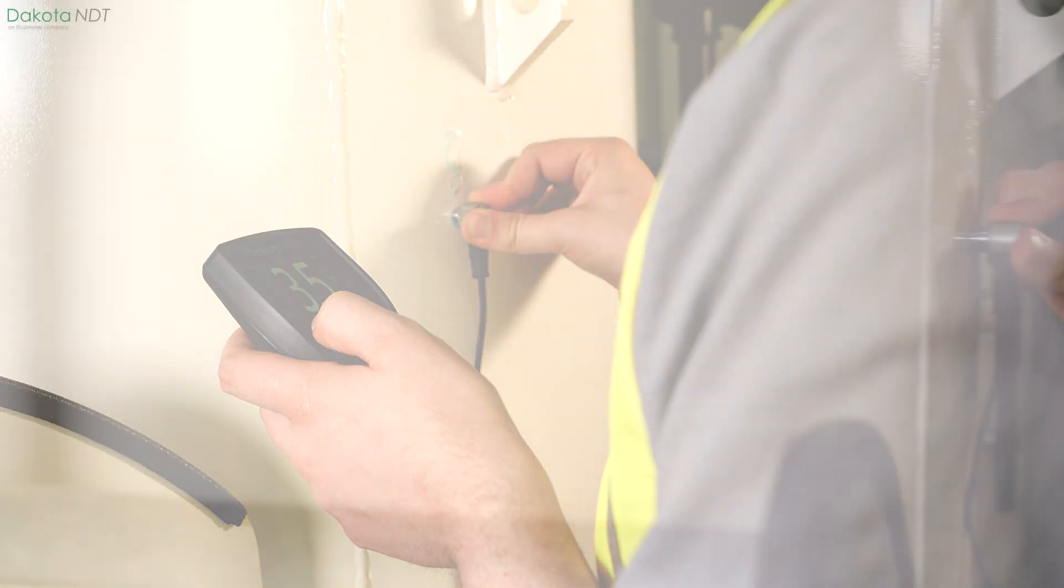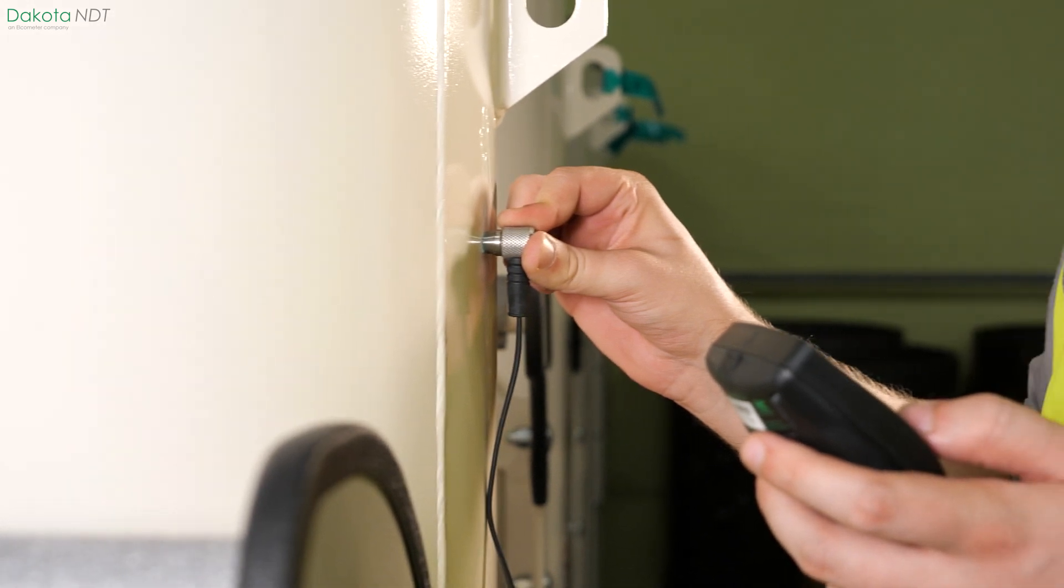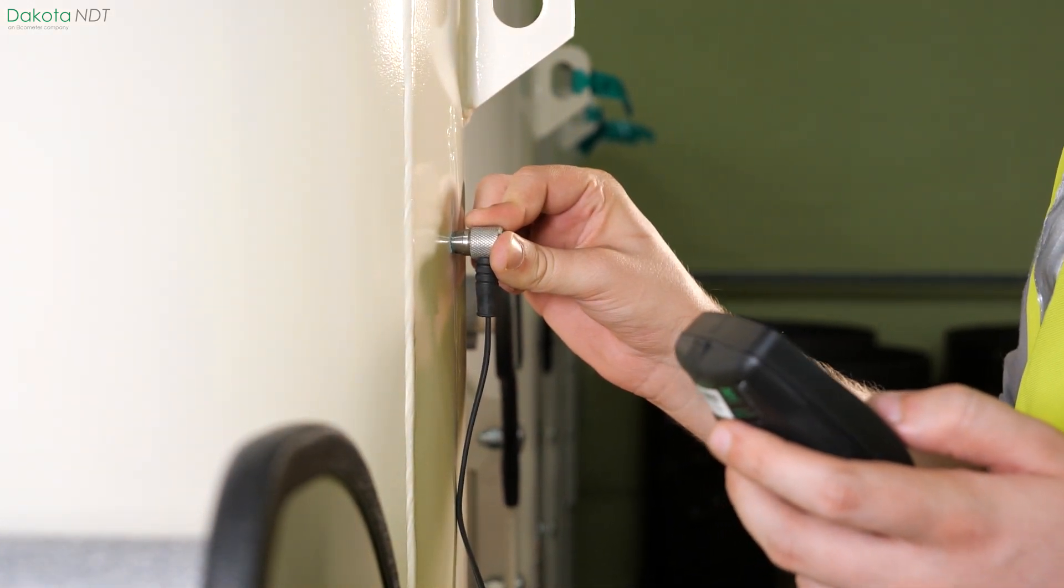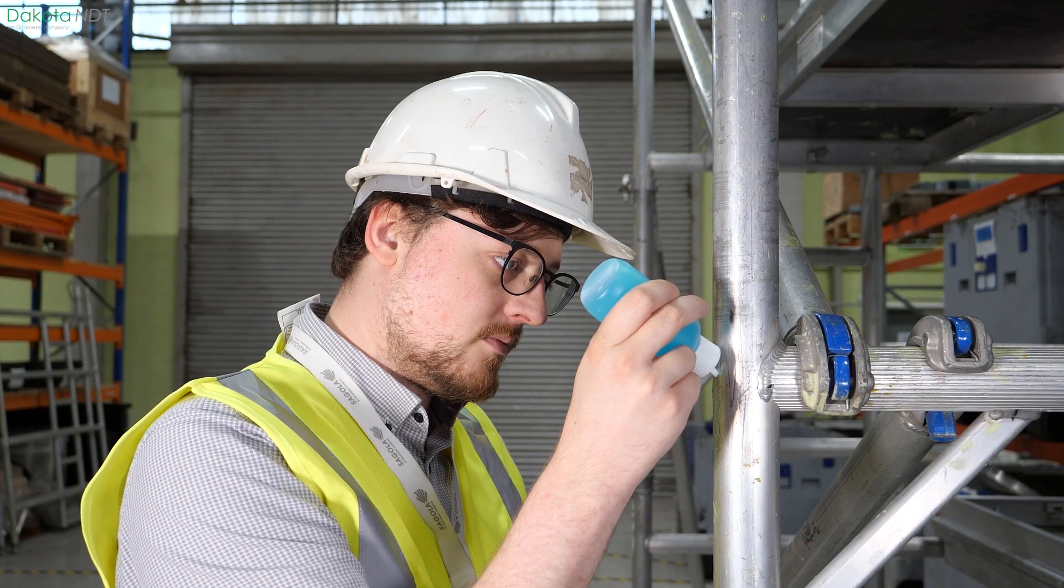Ultrasonic thickness gauges, as their name suggests, are used to ultrasonically measure the thickness of objects when only one side is accessible.